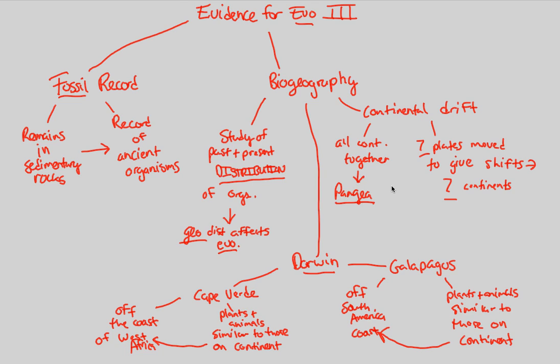So that gives us our final pieces of evidence for evolution. In our final flowchart, we're going to be looking at a theme that I really like: the diversity of life.